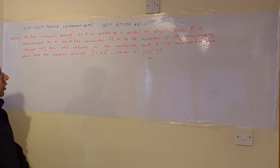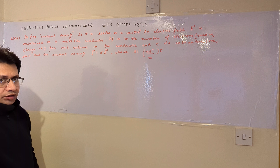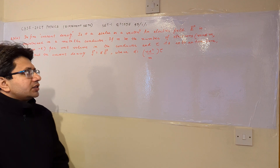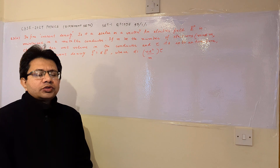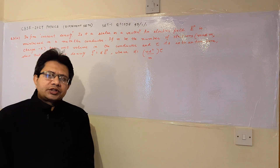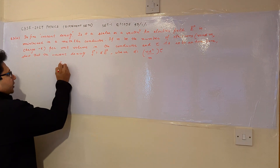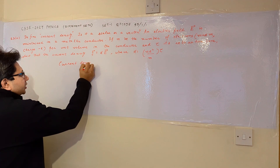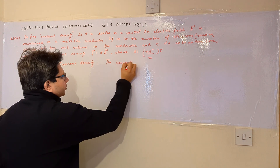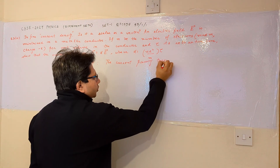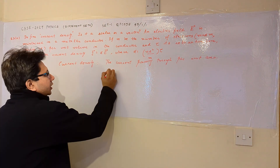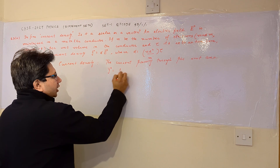This problem is based on the topic of current electricity. First, we define current density. Current density j is the ratio of current and cross-sectional area — it is defined as the current passing through a unit cross-sectional area. The formula is j equals i upon A.